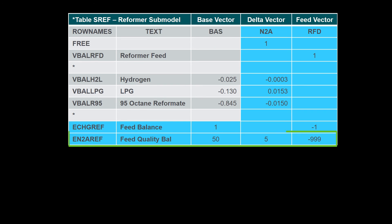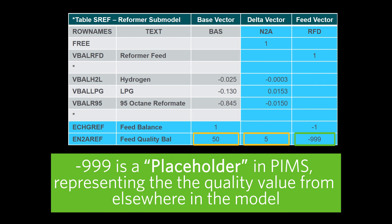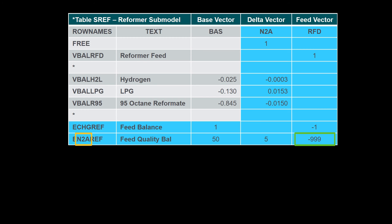The next E row is to balance quality barrels — in this case N plus 2A barrels — and compare actual feed quality with the base feed quality. This determines the amount of adjustment required for the current feed quality. In this way, PIMS can tell how much quality deviation it has from the base quality, so as to decide how much the yield fraction coefficient should be changed. In the reformer submodel, this row contains the base quality value under the base vector column, the quality deviation under the delta vector, and negative 999 under the feed vector. Negative 999 in PIMS is the placeholder — it represents a quality value that PIMS knows already exists in the model.